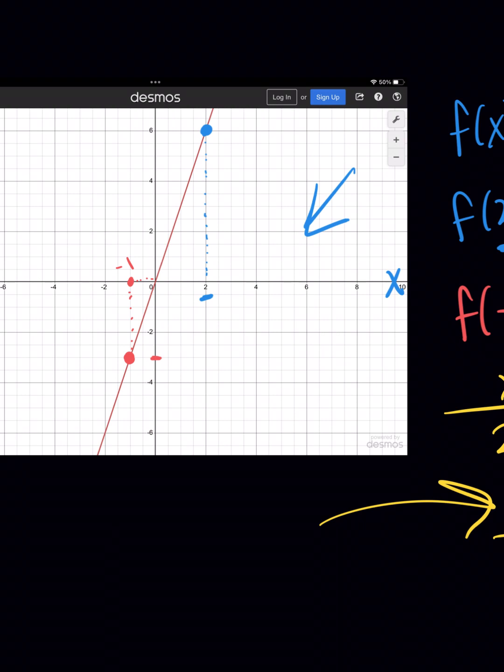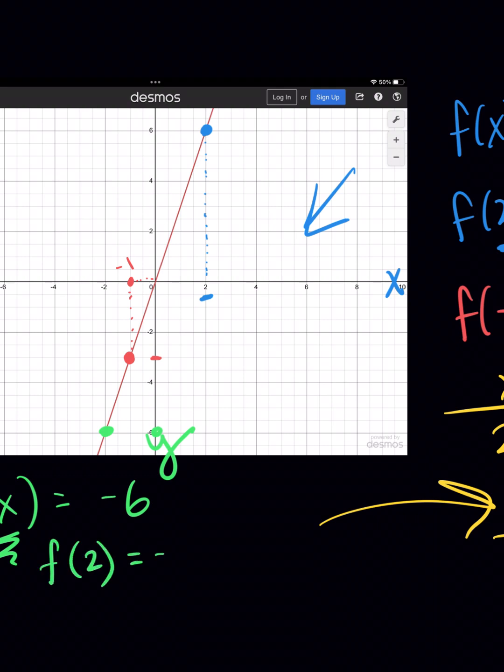Now I can also go backwards. I could say if f of x is equal to negative 6, what is x? So for example, if f of x equals negative 6, what is the x value that I plugged in here? This time, instead, I'm going to look at the y values. So here's y is negative 6, and here is my value for x when y is negative 6. So that would say then f of 2 equals negative 6, and I could add that value over here. So 2, negative 2, sorry about that, y'all.